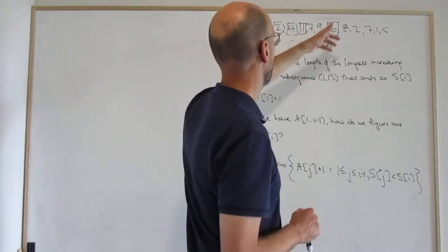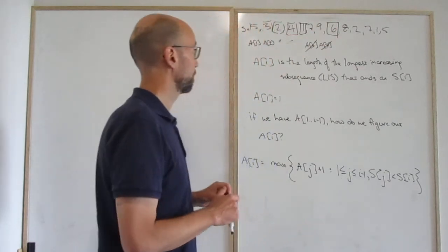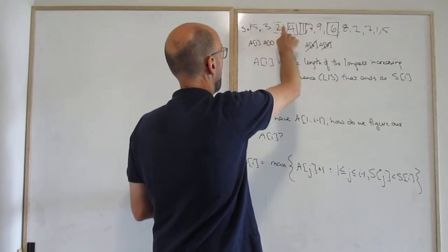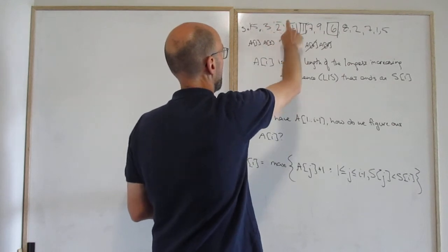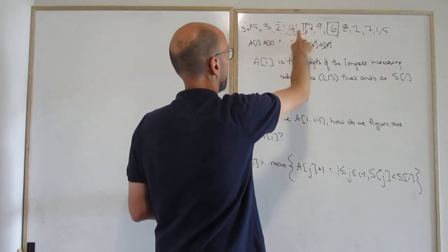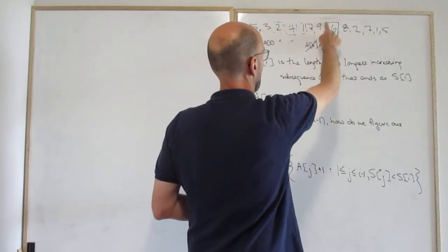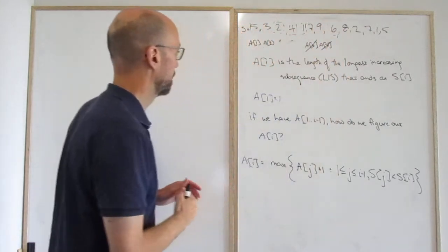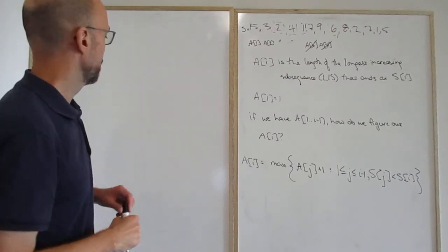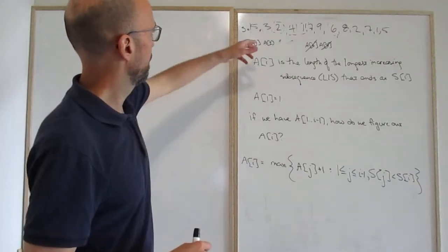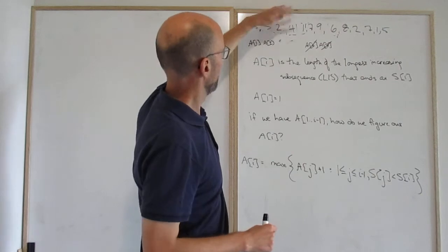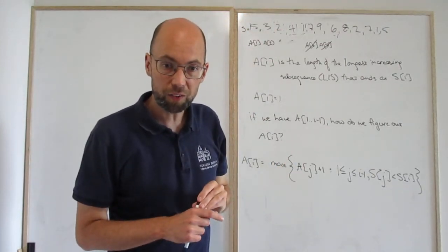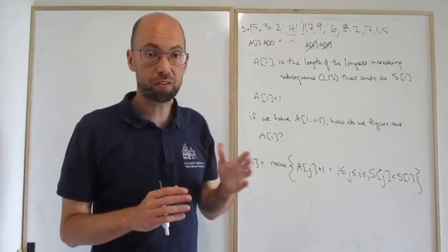So here for example, 5,3 is not an increasing subsequence. But 2,4,7,9 is an increasing subsequence; 2,4,6,8 is an increasing subsequence; 3,4,9 is an increasing subsequence. What's the longest increasing subsequence of this example? We'd have to work it out. Remember, a subsequence — the terms don't have to be consecutive.